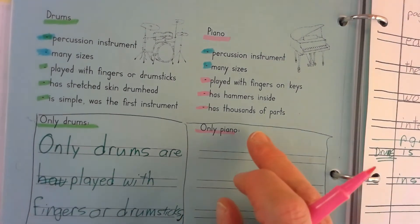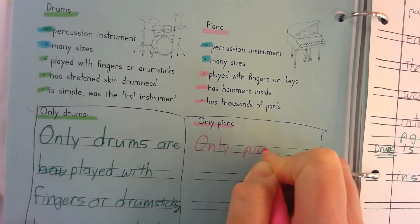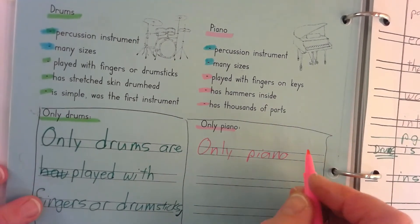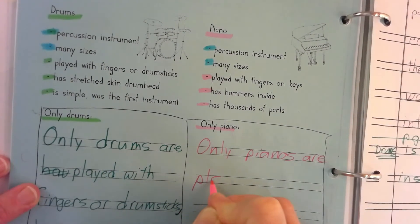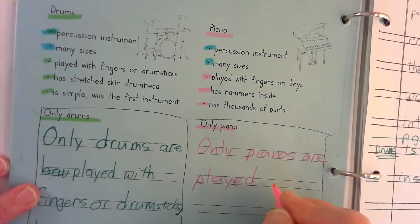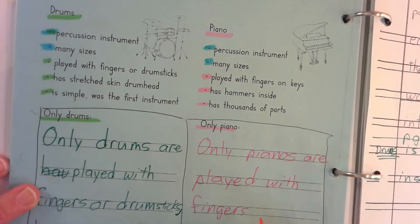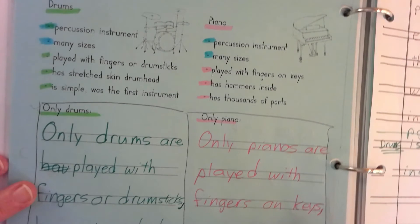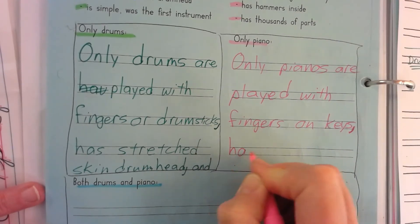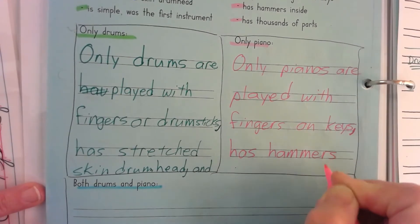Now I'm going to go back to where it says piano and do the same thing. It says only piano. So: only pianos are played with fingers on keys, comma, has hammers...